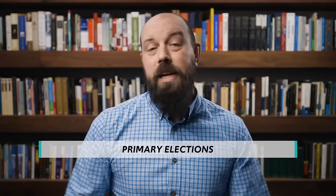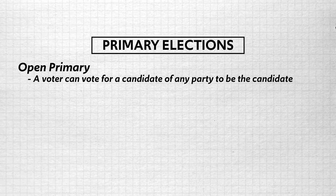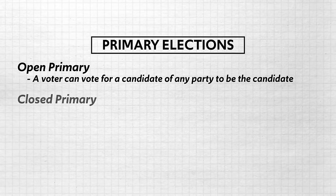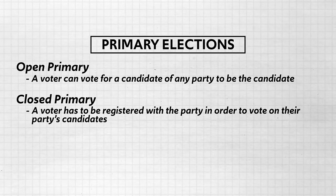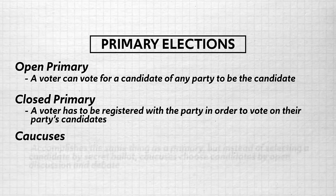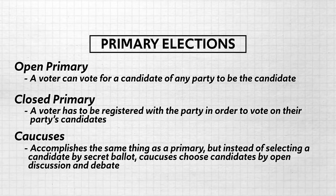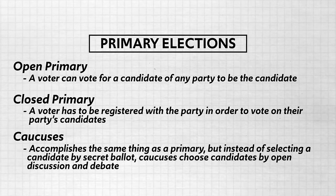So the point is it is very hard to unseat an incumbent. Just like in presidential elections, congressional candidates are chosen by primary elections. Depending on the state, these can be either open or closed primaries. An open primary is where a voter can vote for a candidate of any party, and a closed primary is where a voter has to be registered with the party to vote for their party's candidates. Most states use primaries, but some use caucuses, which do the same thing as a primary but choose candidates by open discussion and debate rather than secret ballot.